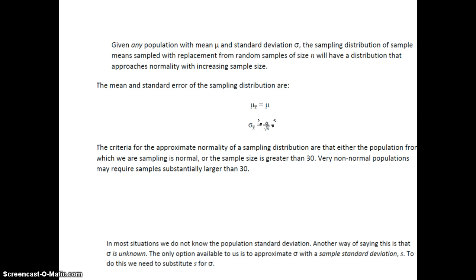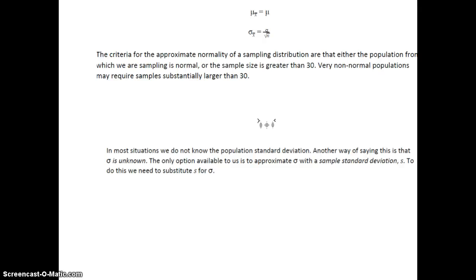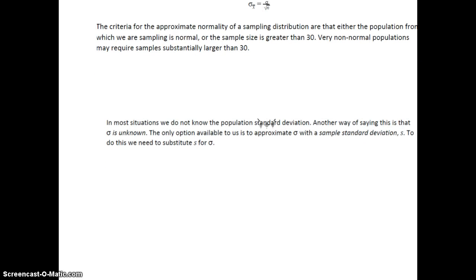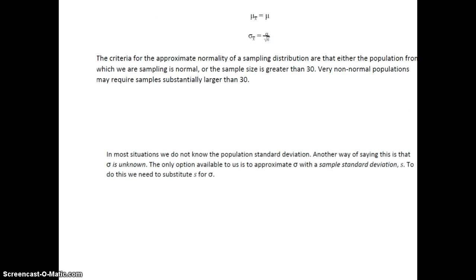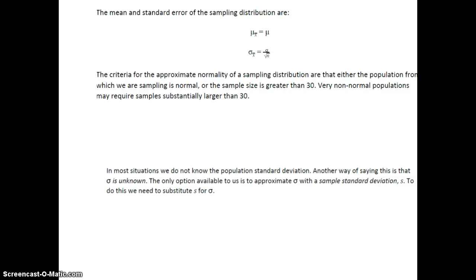Now, when we're dealing with quantitative variables, the criteria for normality is that either the population from which we are sampling is normal, or the sample size is greater than 30. So again, it has to be one or the other of those conditions. Either the population from which we're sampling is normal, or the sample size is greater than 30. It's either or. It does not need to be both.